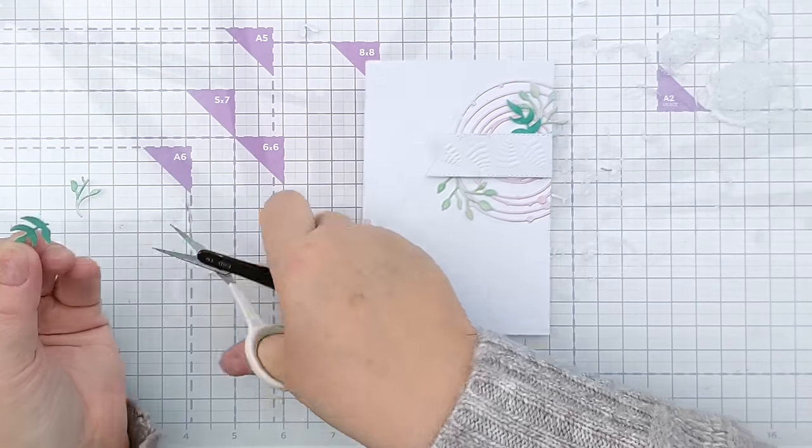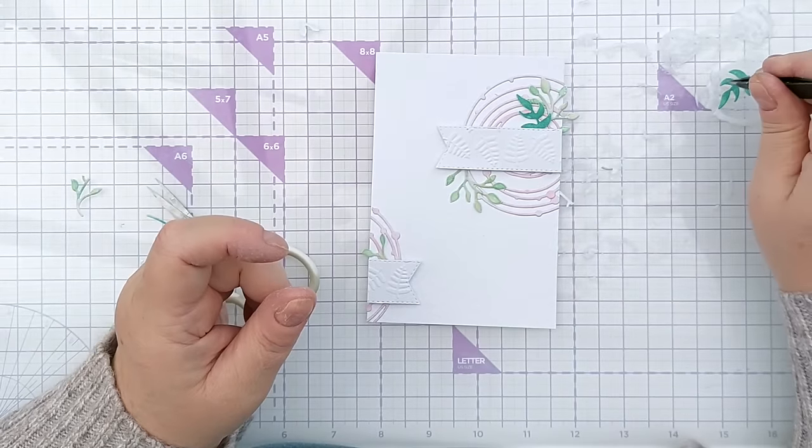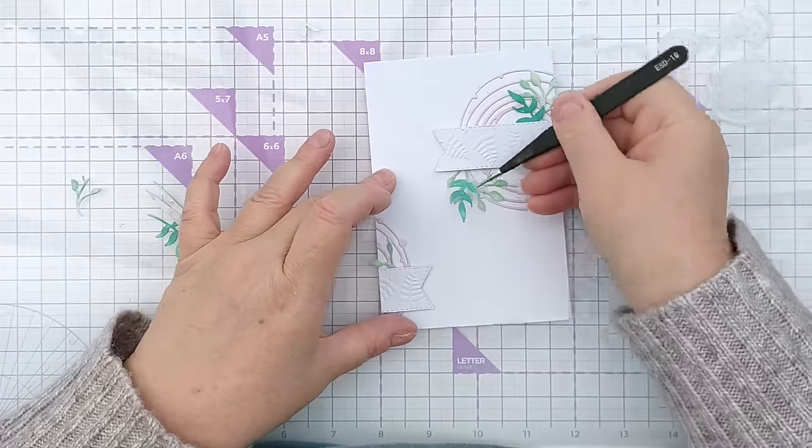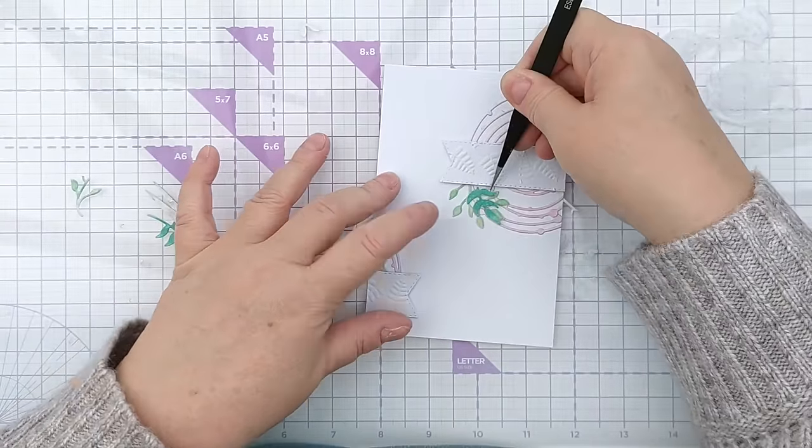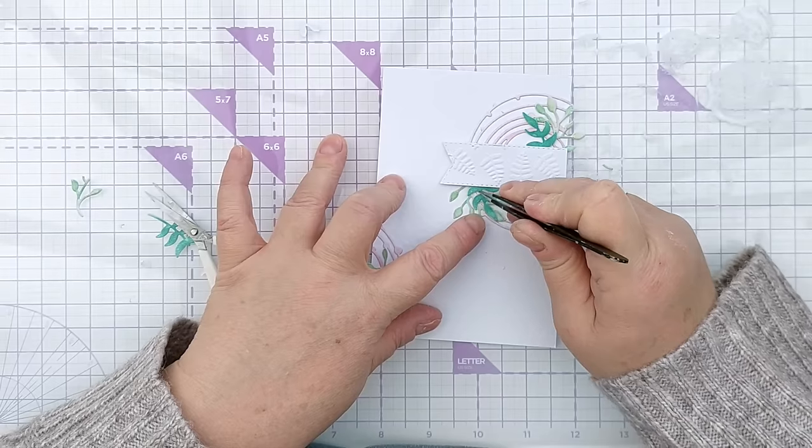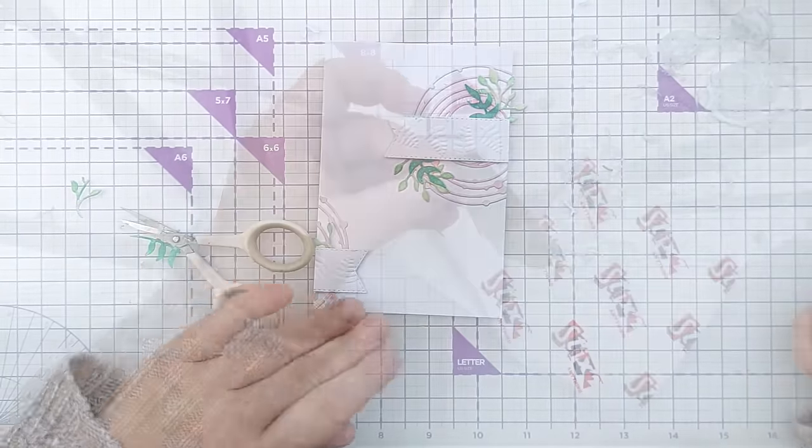If you find you get too much glue on the back just dab it off on a bit of paper towel or on your palette or your glass mat, and then put your die cut on your card and you should find you don't get any splurging out the side. So that's how I added my darker green leafy bits by dipping them in glue.